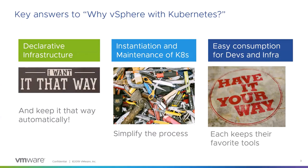Why does VMware consider Kubernetes such an important part of the infrastructure to bring it into vSphere? First of all, declarative infrastructure. There's a whole lot of power to be able to say this is how I want my infrastructure, and then have some other entity continually looking at it and making sure that it stays that way. The instantiation and maintenance of Kubernetes is really difficult. We want to simplify the process of getting Kubernetes up and running, and more importantly, maintaining it, keeping it up to date, keeping it proper.